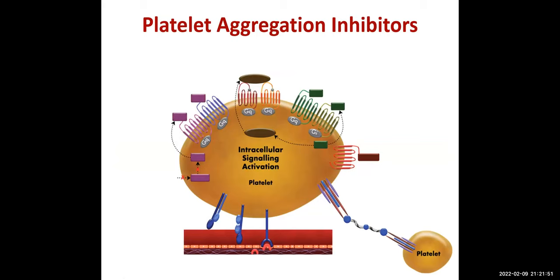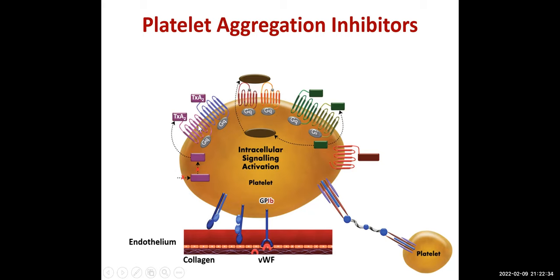This figure will serve as the basis for showing the mechanism of action of different groups of antiplatelet drugs. The endothelium is shown with endothelial cells beneath, collagen, von Willebrand factor, and glycoprotein 1B (GP1B). The glycoprotein binds to von Willebrand factor when exposed to collagen. Thromboxane A2 and all these receptors pass through the membrane seven times — they are G protein-coupled receptors.